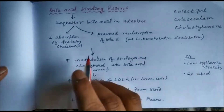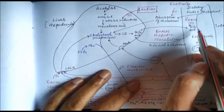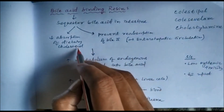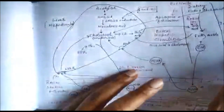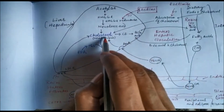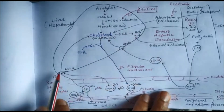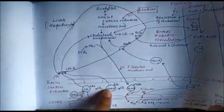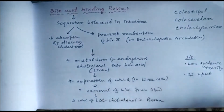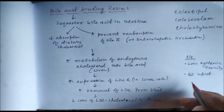Bile acid binding resins sequester bile acids in the intestine, thereby decreasing absorption of dietary cholesterol and inhibiting enterohepatic circulation. Because of that, there will be increased metabolism of cholesterol into bile acids, so cholesterol decreases in hepatocytes, leading to increased expression of LDL receptors. LDL uptake will increase, so LDL cholesterol will decrease in the blood. These drugs don't have much systemic toxicity; the major side effect is gastrointestinal upset.